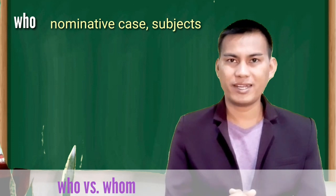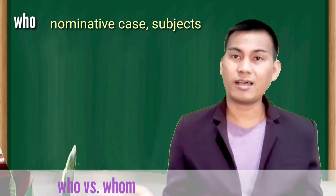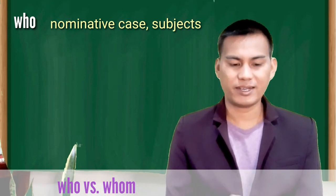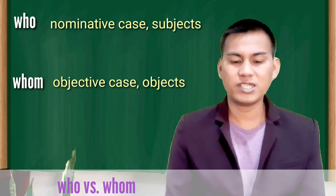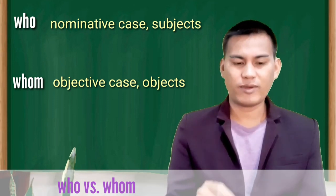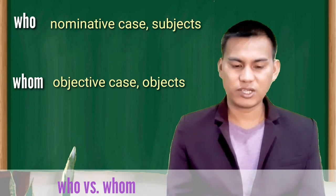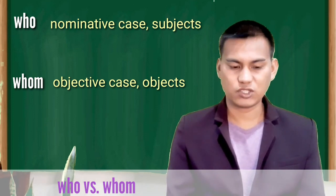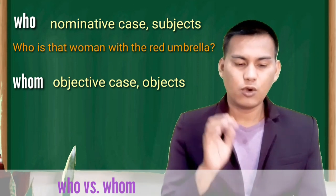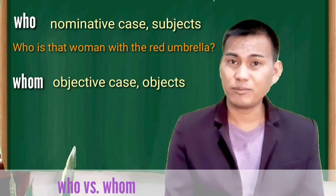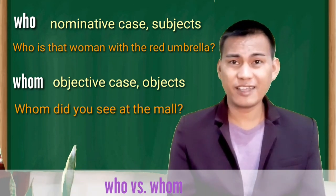Who versus whom. Who is the nominative case. Use it for subjects and predicate nominatives. Whom is the objective case. Use it for direct objects, indirect objects, and objects of prepositions. Example. Who is that woman with the red umbrella? Whom did you see at the mall?